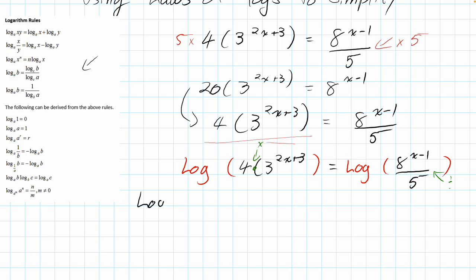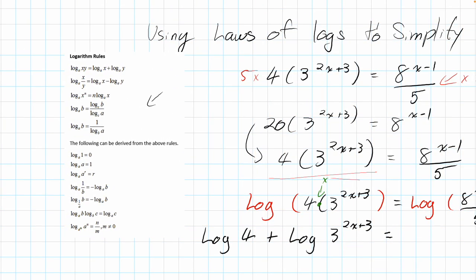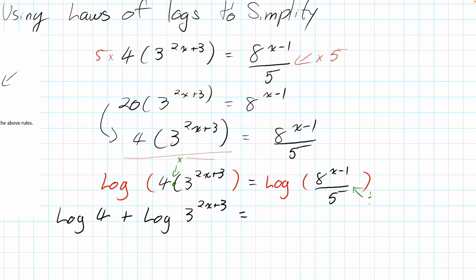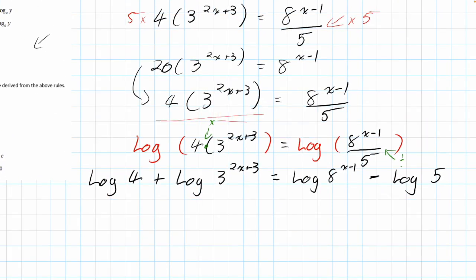I can say log argument 4 plus log argument 3 to the power of 2x plus 3. And then on the other side, same idea. Because we have division, I'm going to split this one. I'm going to call it log something minus log of whatever the denominator is. So on the right-hand side, we get log of, this part will be 8 to the power of x minus 1, subtract log of 5. So I've now split this up, and I got rid of my fractions.